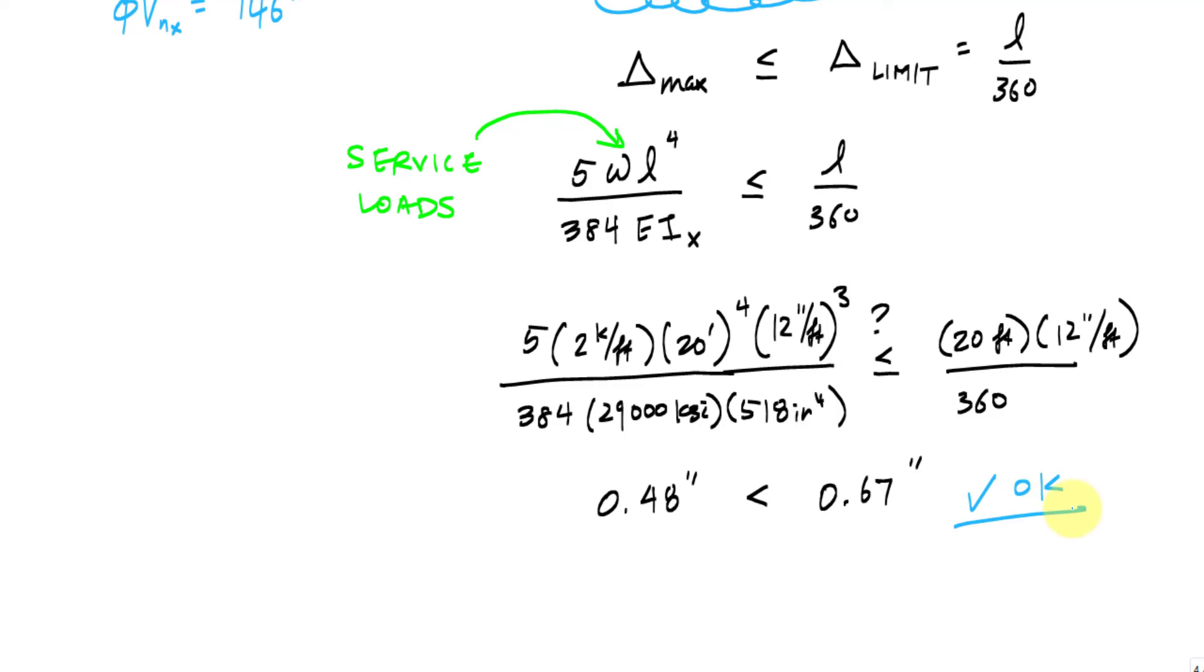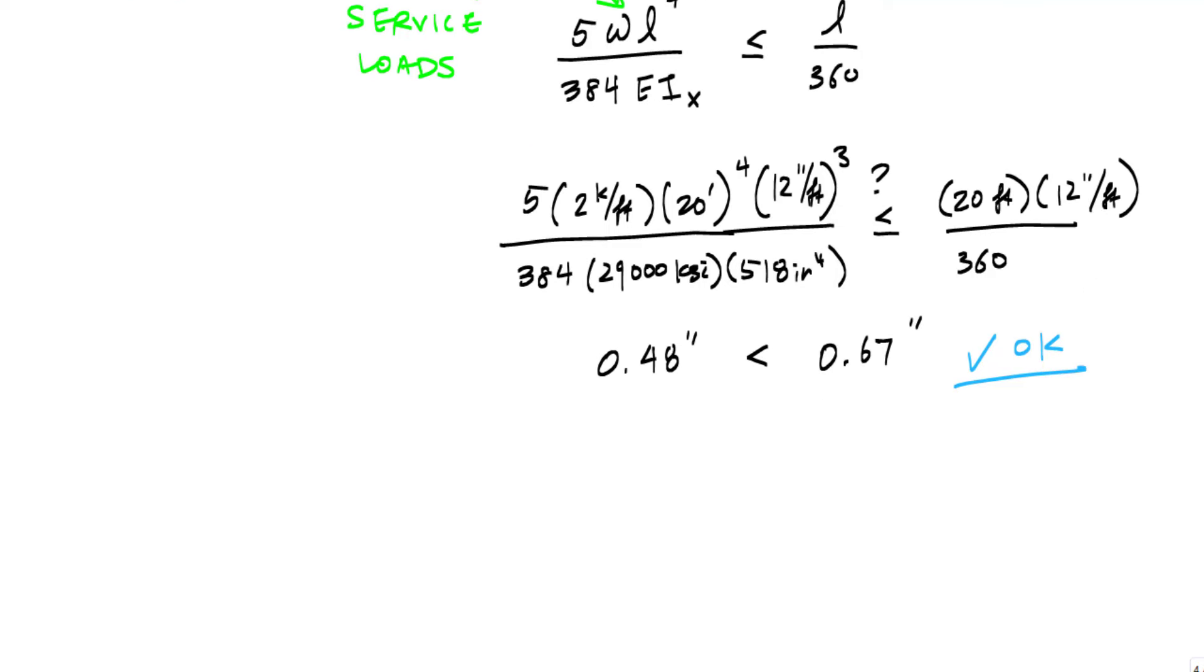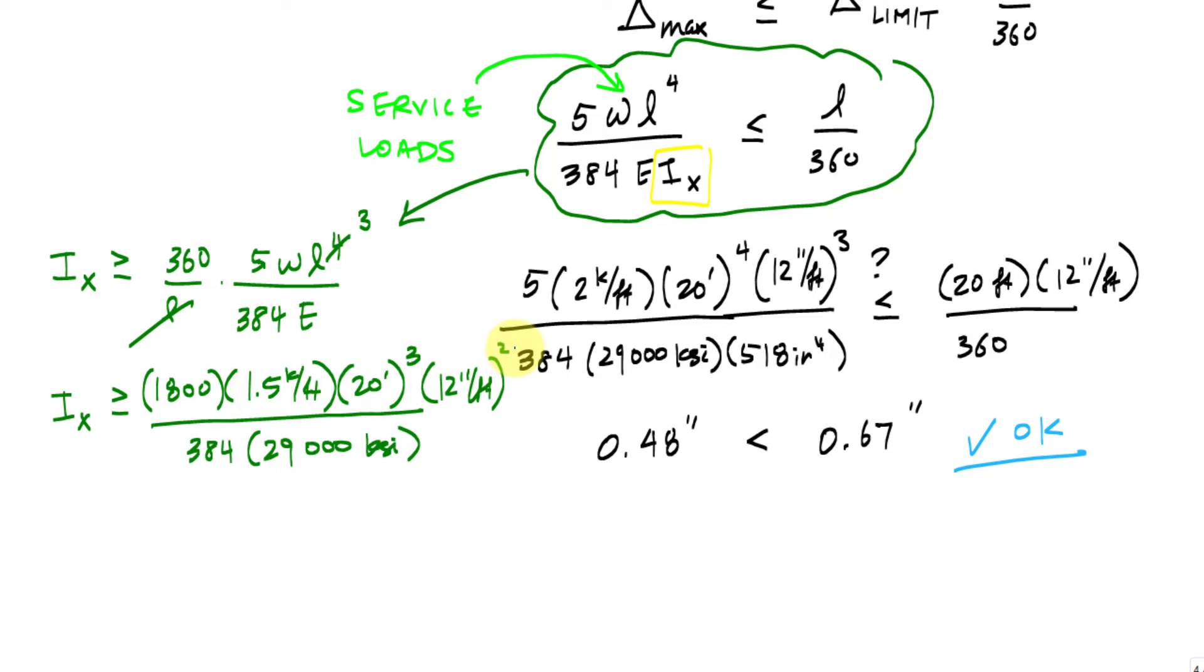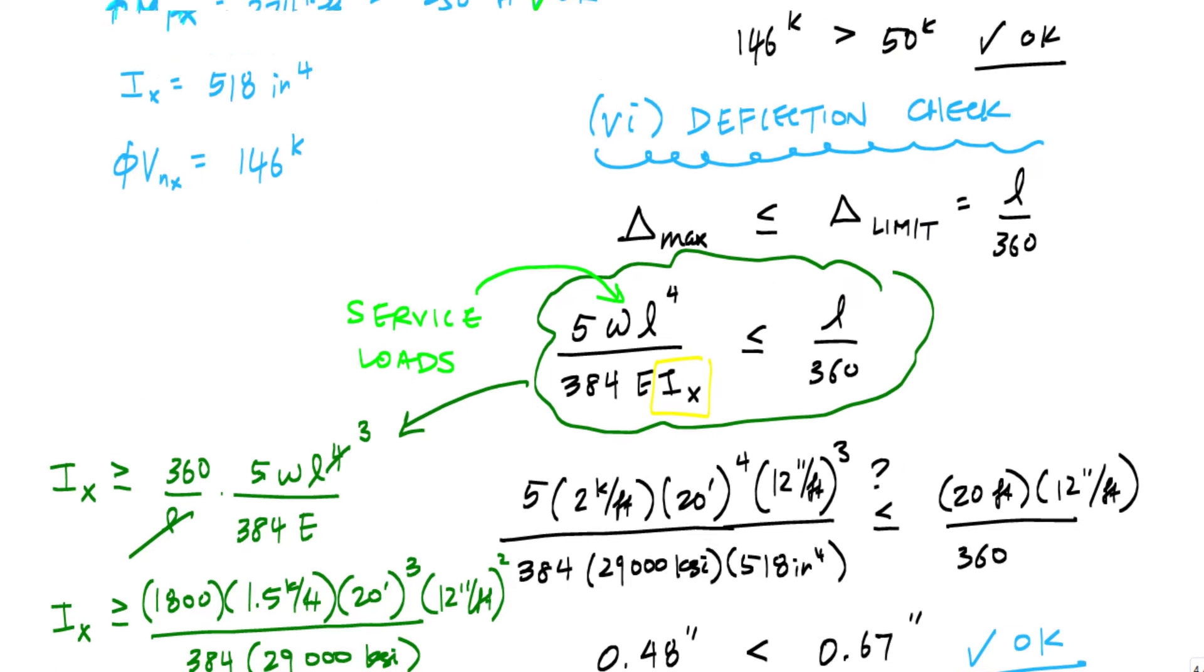Now with the deflection, just one last comment here. What I could have done is I could have created a criteria for the moment of inertia. I could have used this relationship to determine a requirement for Ix. So that could have been Ix has to be greater than or equal to this expression.